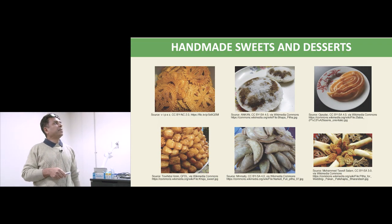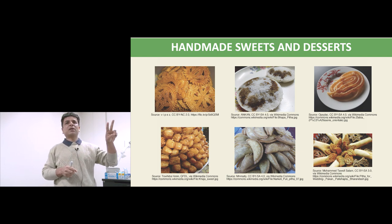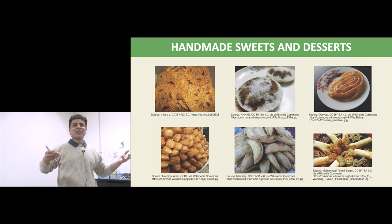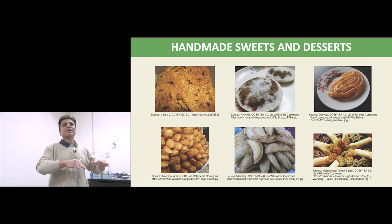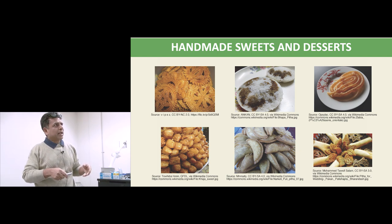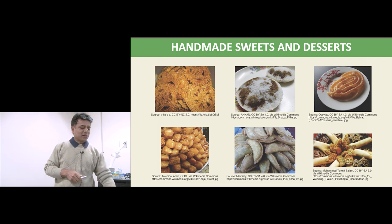These handmade sweets and desserts are traditional. In the harvesting season, when farmers cut down their crops, they have much rice and flour. We produce rice two to three times per year. After harvesting, farmers preserve their rice and prepare different kinds of handmade cakes and rice-powder sweets, then invite each other and enjoy the time together after the harvesting season.